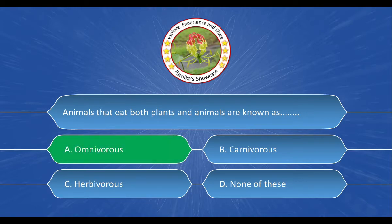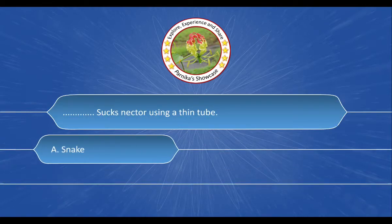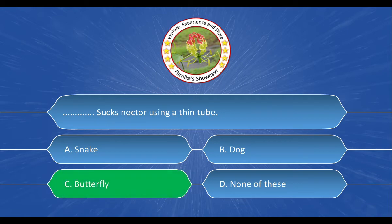Next question: Dash dash sucks nectar using a thin tube. The options are A. Snake, B. Dog, C. Butterfly, D. None of these. And the correct answer is option C. Butterfly.